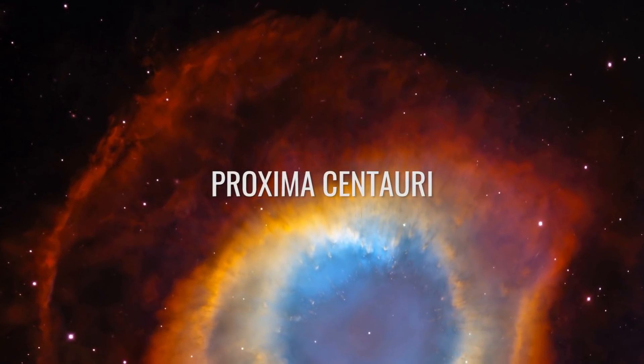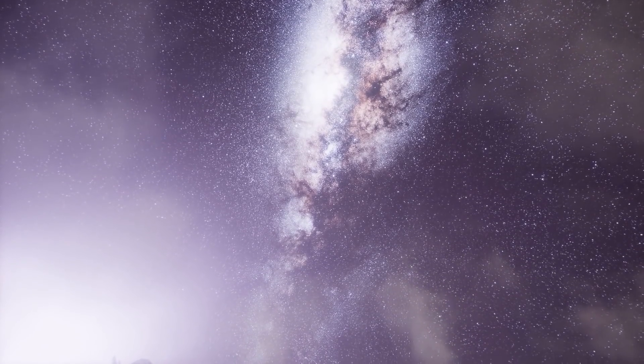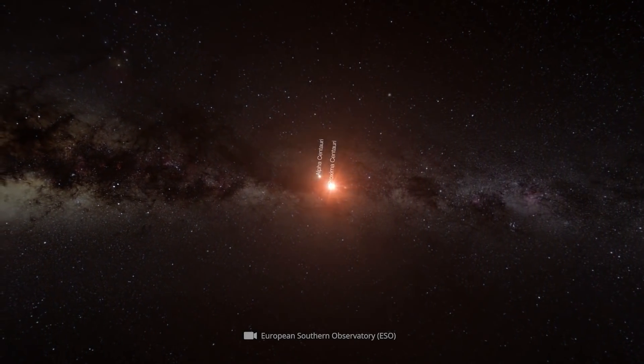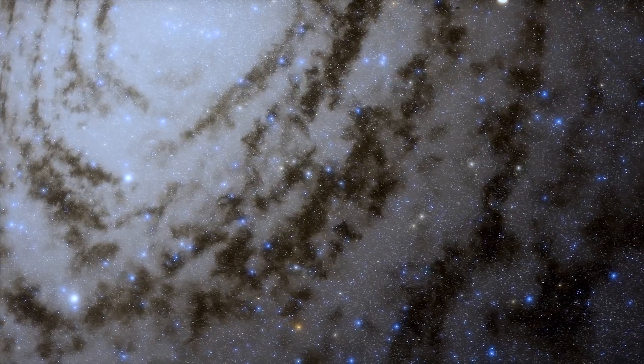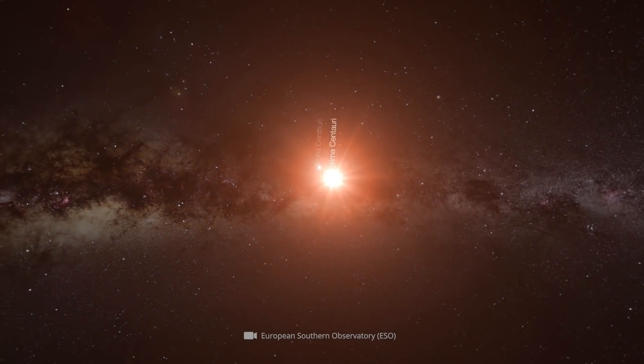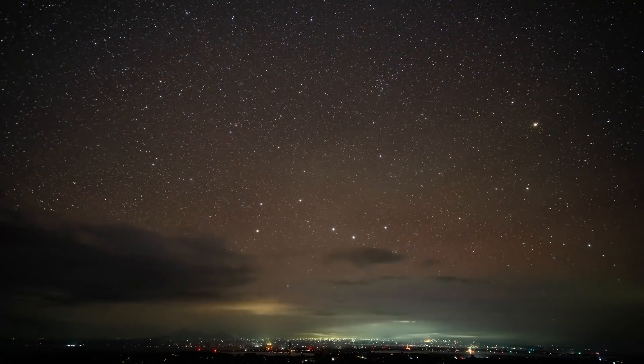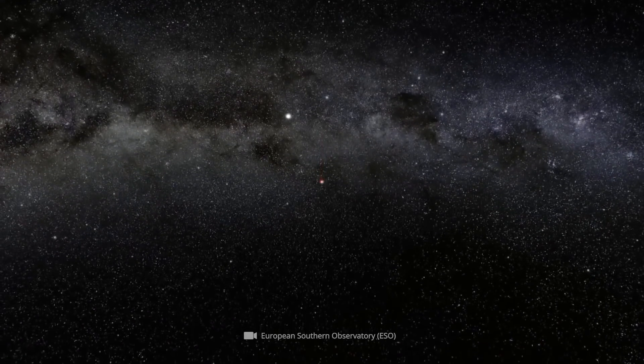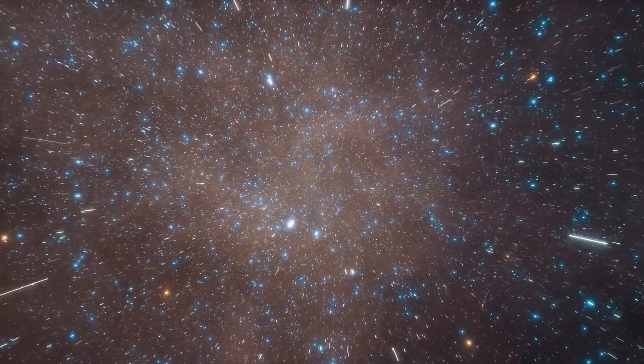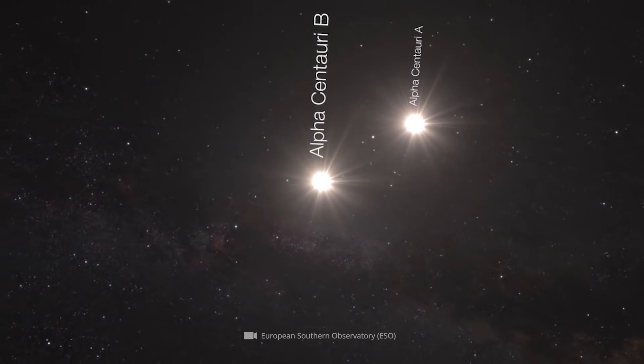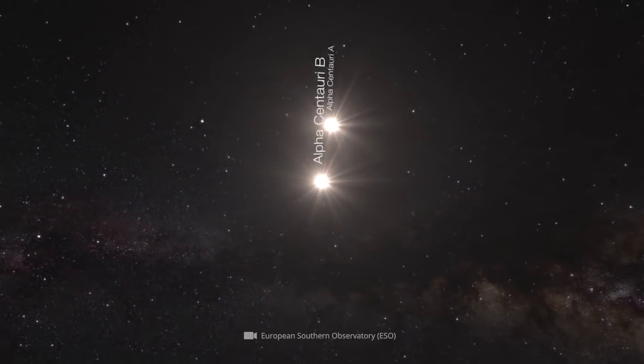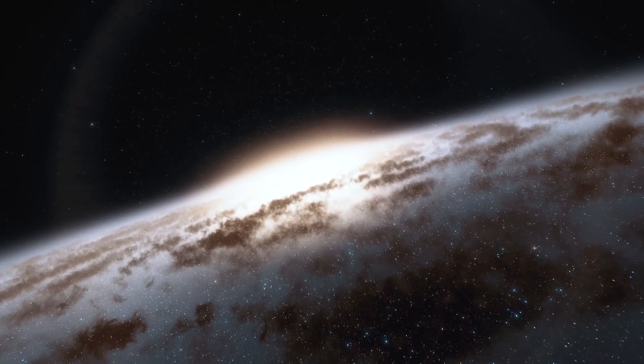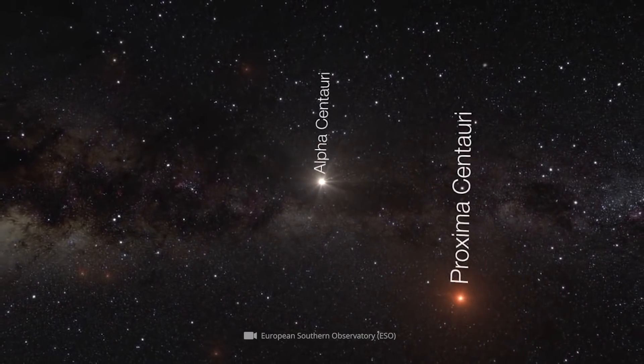As we mentioned at the beginning, the binary star system Alpha Centauri forms a superior triple system together with Proxima Centauri. Although the actual affiliation of Proxima Centauri to this cosmic group has been much discussed in the past, its galactic membership is now taken for granted. The star closest to the sun is separated by a distance of about 12,900 astronomical units, which corresponds to 1,000 times the distance prevailing between Alpha Centauri A and B. Despite this huge spatial gap, a detailed scientific investigation showed that the red dwarf is indeed gravitationally bound to the pair of stars.